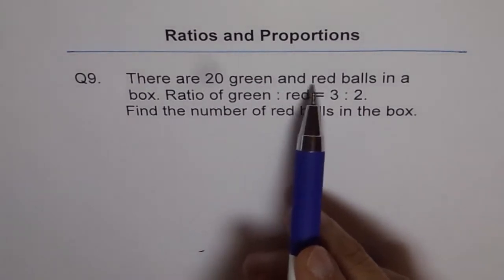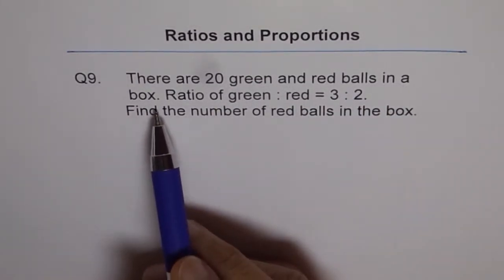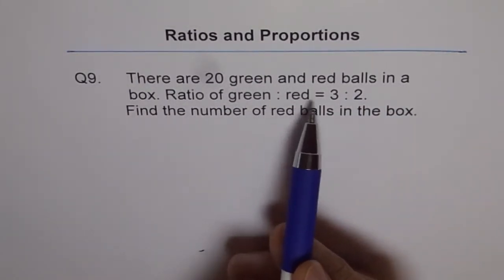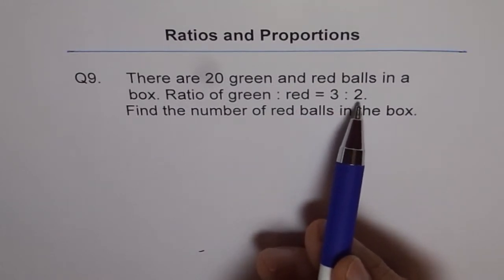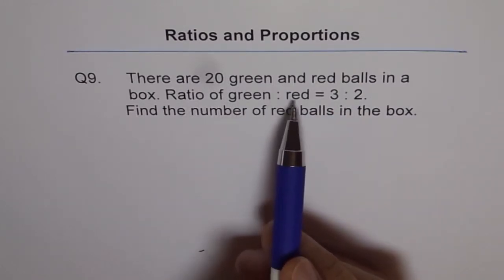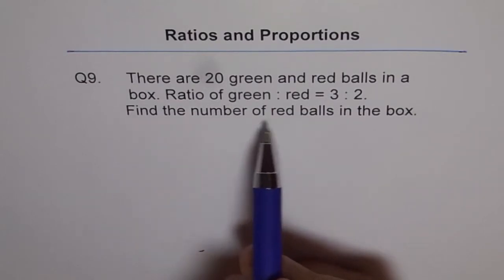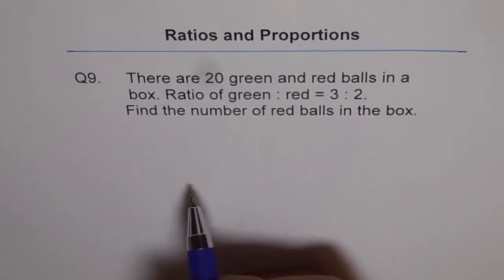There are 20 green and red balls in a box. Ratio of green to red is 3 is to 2. Find the number of red balls in the box.